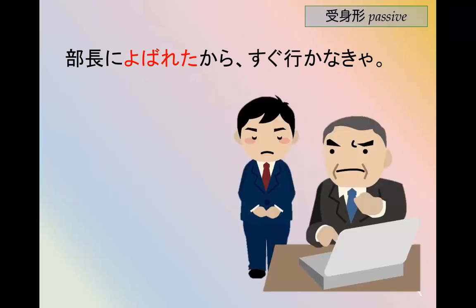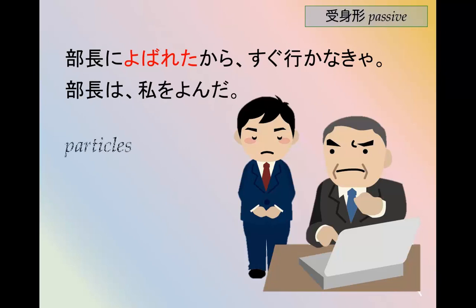Let's look at one of them more closely. 部長に呼ばれたからすぐ行かなきゃ. Compare that to 部長は私を呼んだ. Note the particles in use: に, は or が, and を. When we say 部長に呼ばれたからすぐ行かなきゃ, 私 — I — am the subject throughout the whole sentence. So I was called by the chief, and I have to go. Compare that to 部長は私を呼んだ — the department chief called me — but then I have to go, so 私は行かなきゃ. Using the passive here allows you to maintain the same subject even though something happened to you.